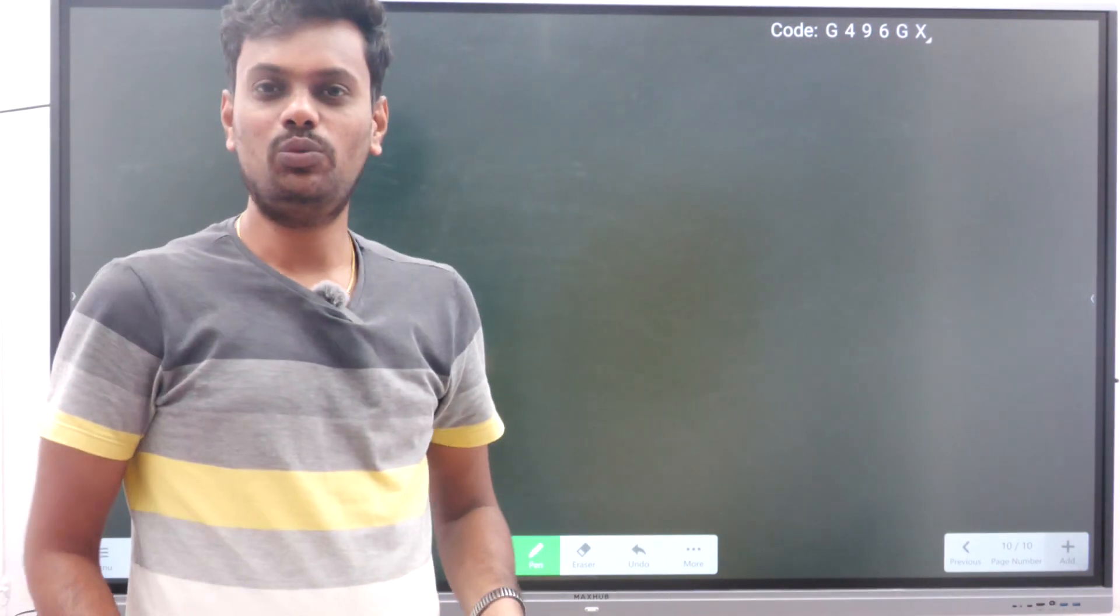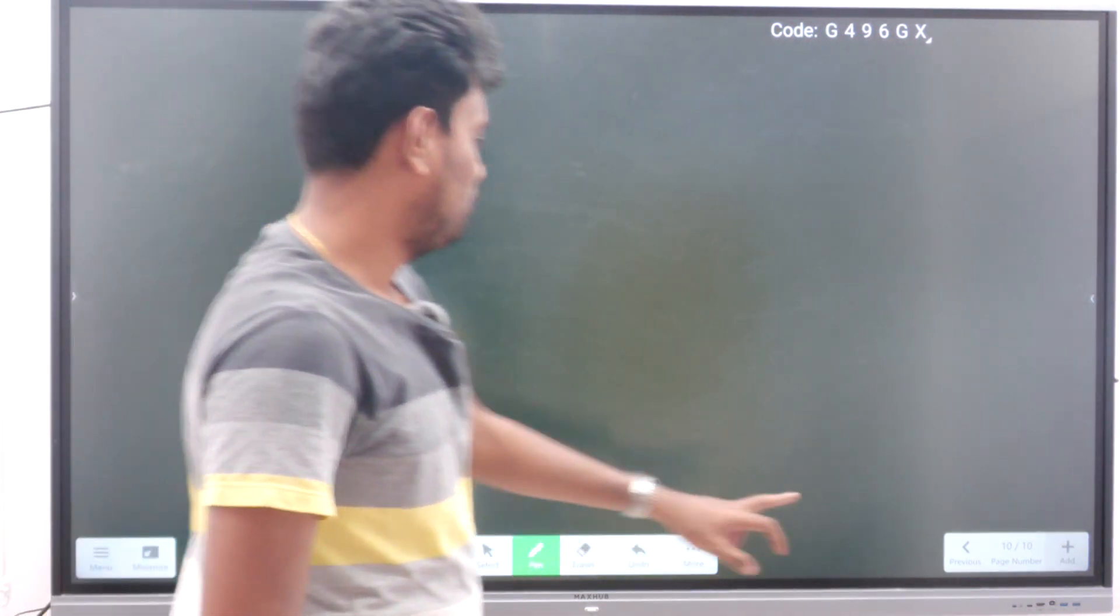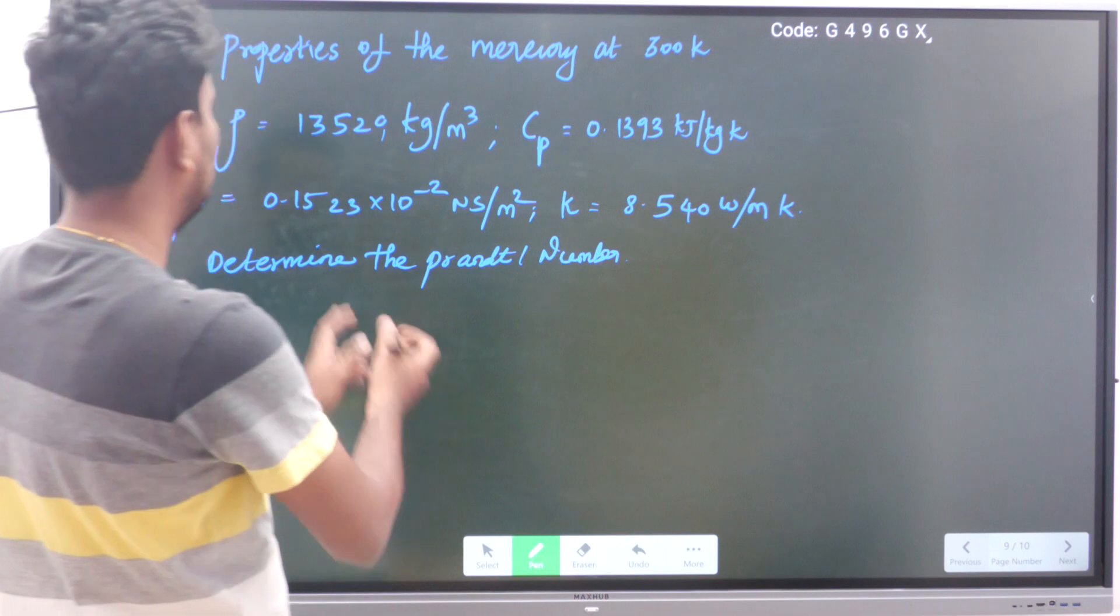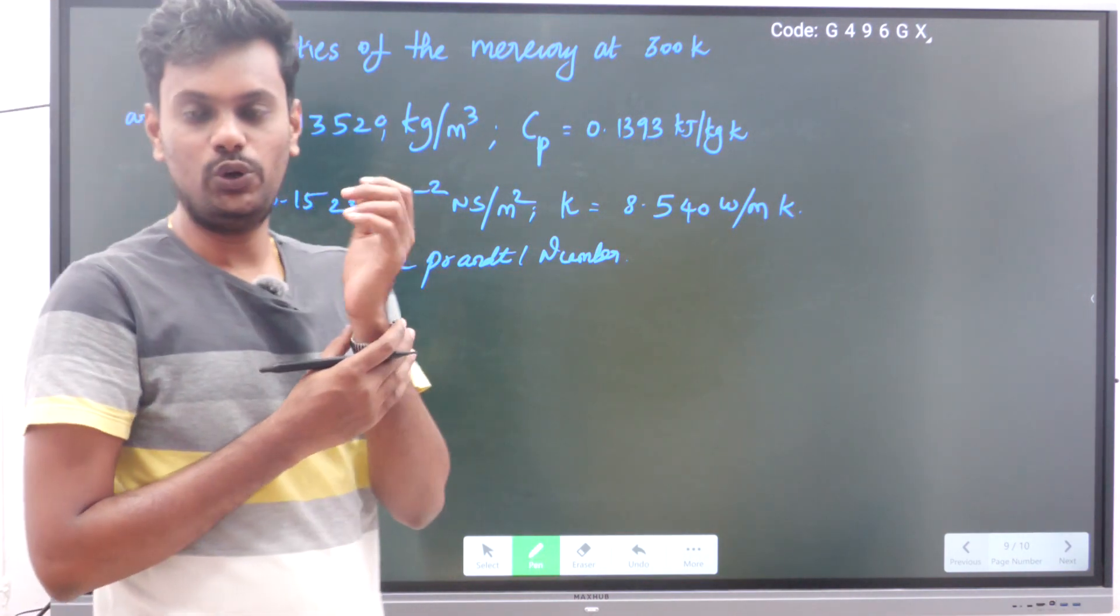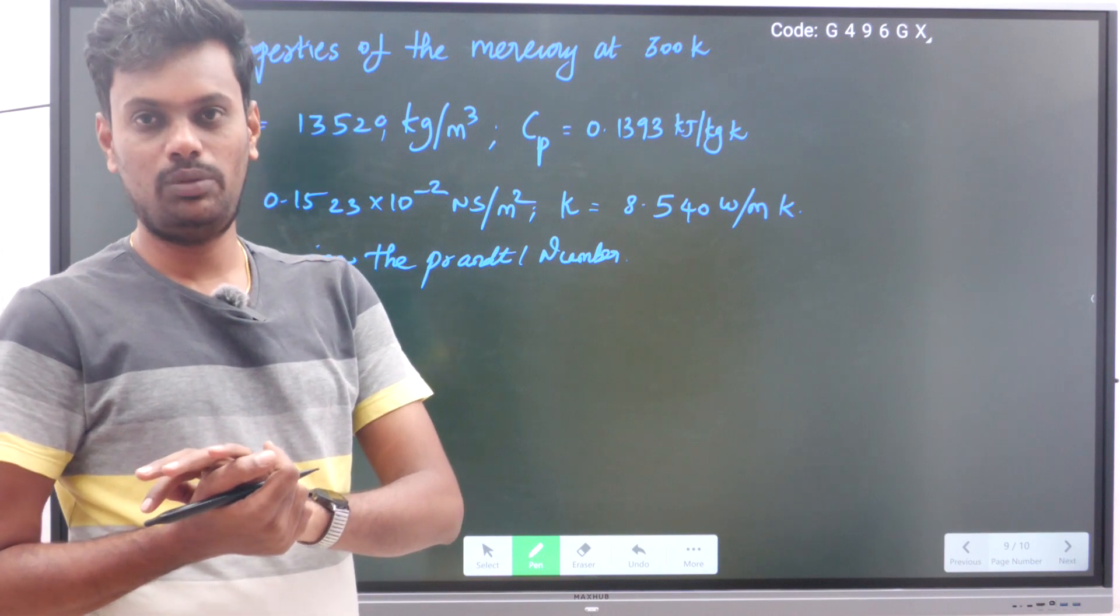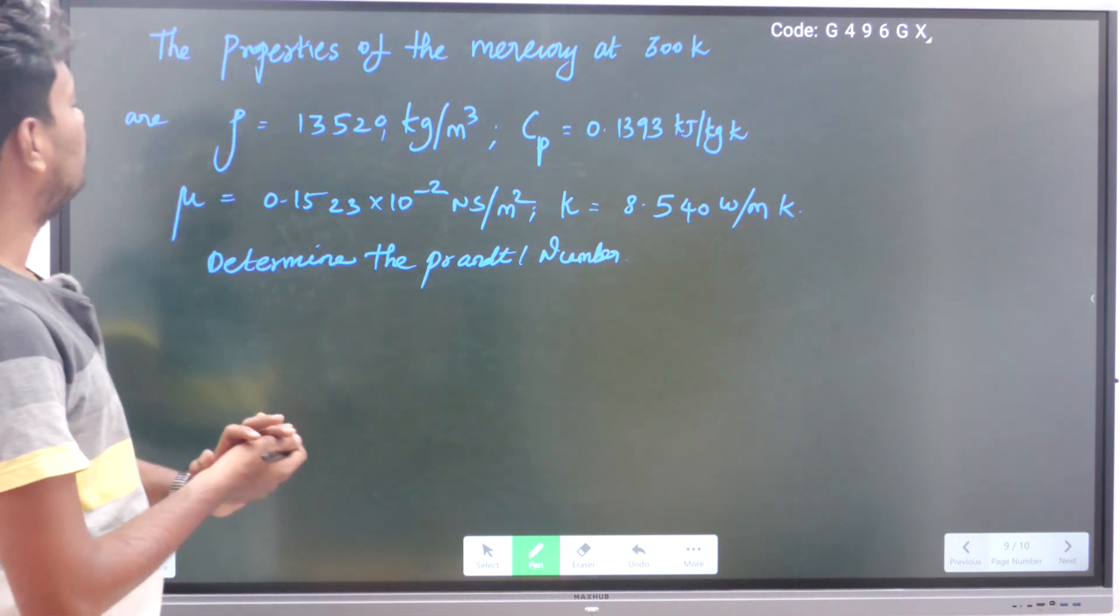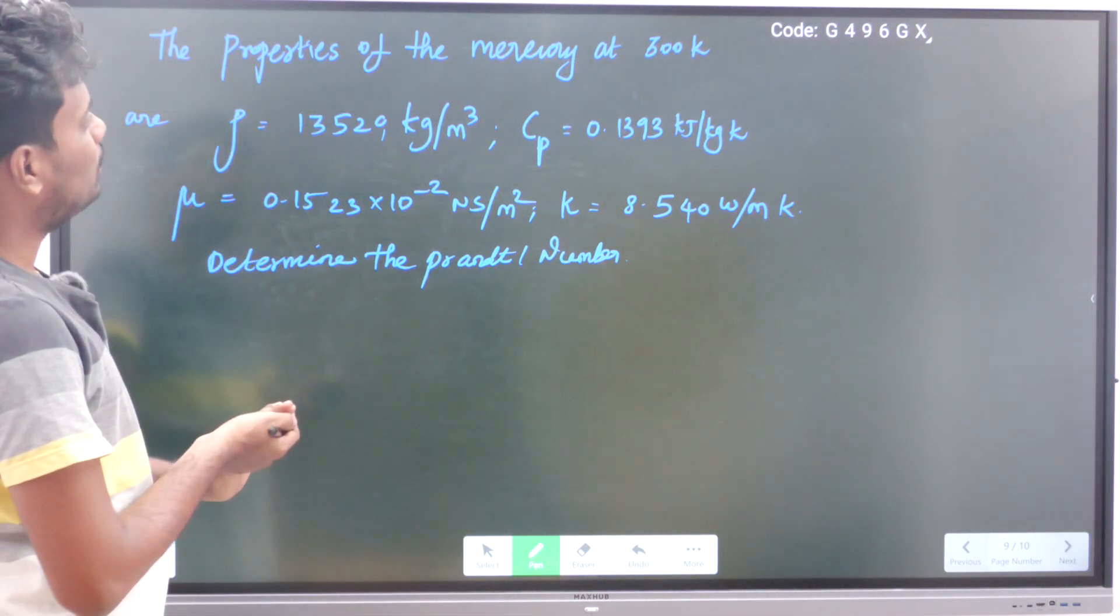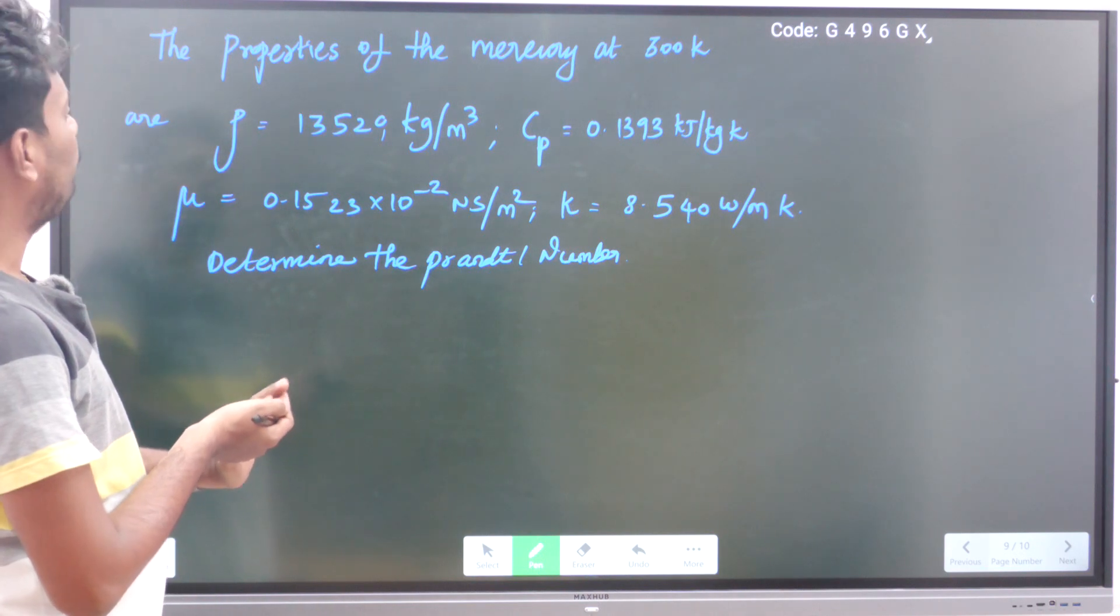Good evening, we will solve one more problem based on Prandtl number. As I have told you, this question I have seen in the GATE examination previous question paper. Here, read the question: the properties of mercury at 300 Kelvin are given.